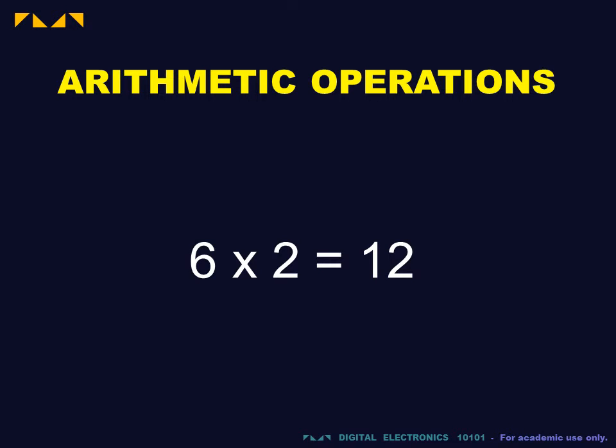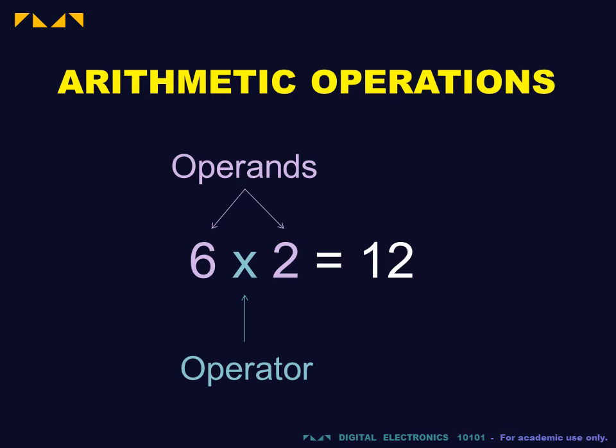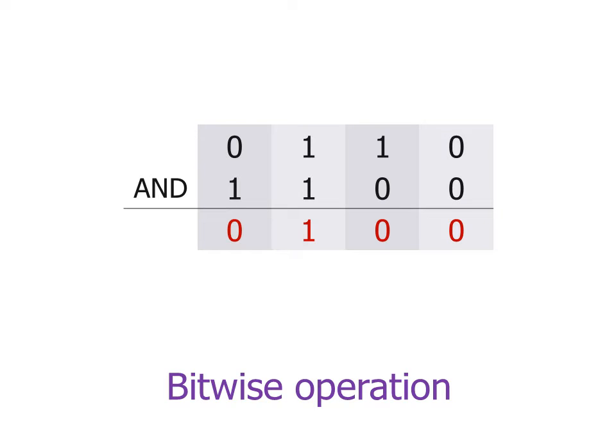We will now view these operations in the context of arithmetic. In arithmetic terms, the inputs to operations are called operands. The function itself is called the operator. For binary operators, we can arrange the operands and the operator as in conventional arithmetic. For bitwise operation, the result is obtained by applying the operator to corresponding bits.